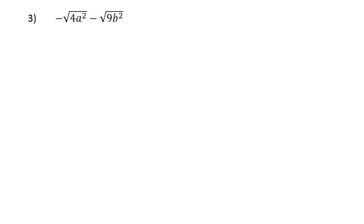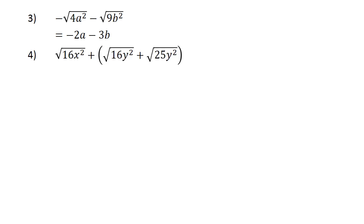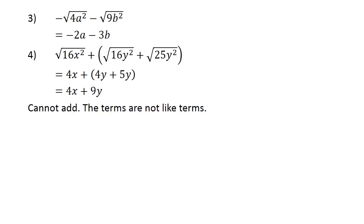Negative square root of 4a to the power of 2 minus square root of 9b to the power of 2. Equals 4x, plus in brackets 4y plus 5y, close brackets, equals 4x plus 9y. You cannot add — the terms are not like terms.